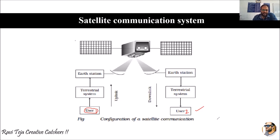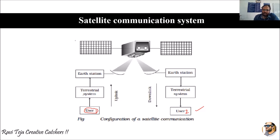Whatever data User 1 is recording or gathering is given to the first terrestrial system. In satellite communication, the terrestrial system refers to a contractor, vendor, or service provider that transmits the signal to the earth station — for example, mobile services or DTH services. These terrestrial systems can be considered as service providers giving signals for DTH connections, TV live broadcasts, or mobile communication systems.